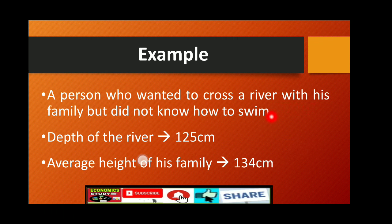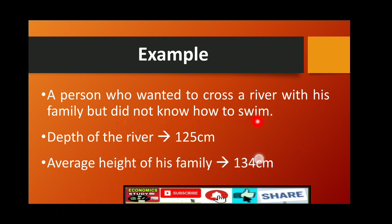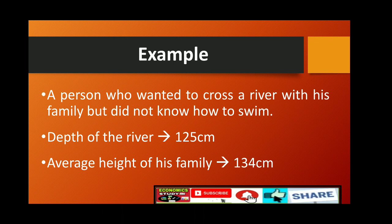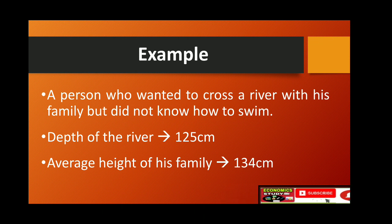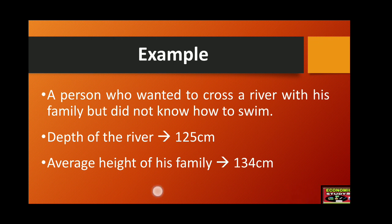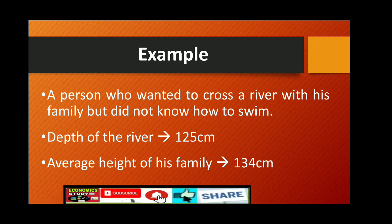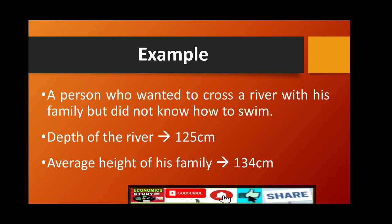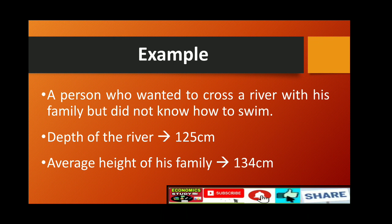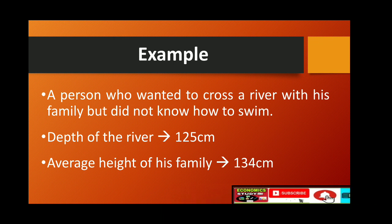A person who wanted to cross a river with his family did not know how to swim. A family of four persons — himself, his wife, and two children — set out to cross a river. The depth of the river is 125 centimeters. He knew the average depth of the river to be 125 centimeters, and the average height of his family is 134 centimeters.